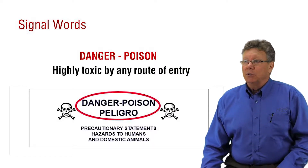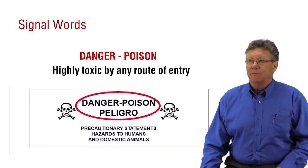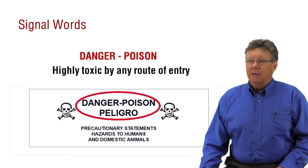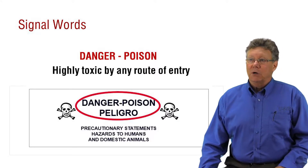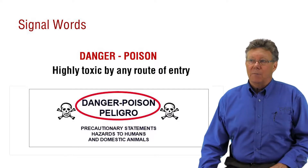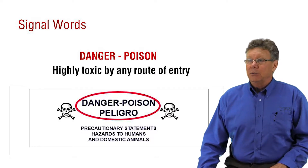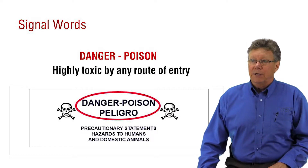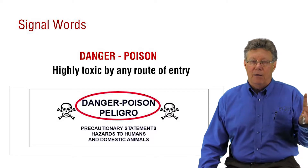Let's review the four signal words in order from the most to the least toxic. The highly toxic products have the signal word danger, poison, peligro with the skull and crossbones. Peligro is Spanish for danger. You'll find most signal words in both English and Spanish on the pesticide label. Danger, poison indicates that products are highly toxic by any route of entry.